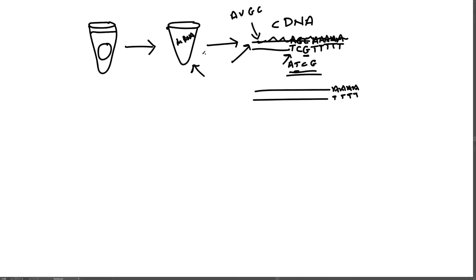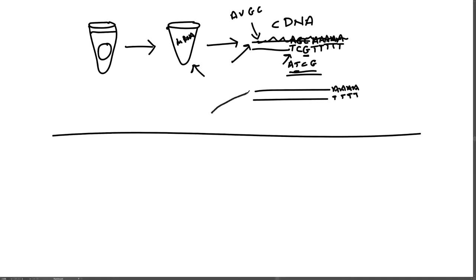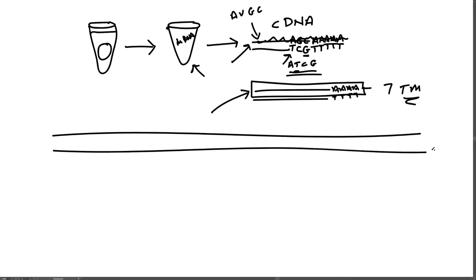When a sequence is given in a database, they give you just the top strand of the mRNA. You can line up sequences of messenger RNAs from known seven transmembrane domain proteins — there might be known rat sequences for different receptor species. You align them using a computer program and look for regions that are identical between them.